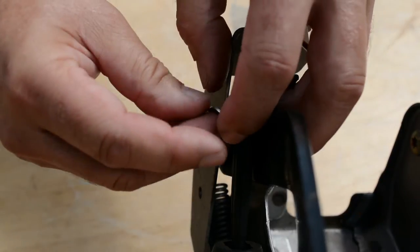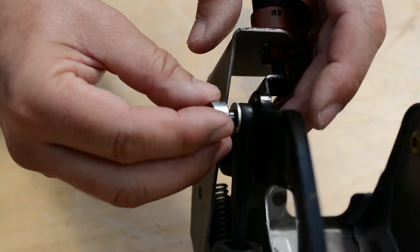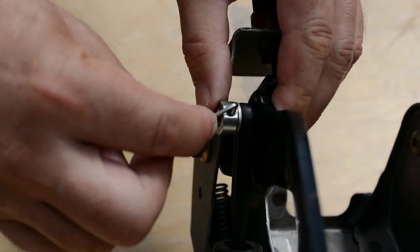It is very easy to fit. Just fit the washer followed by the collar and tighten up the grub screw with the Allen key provided.